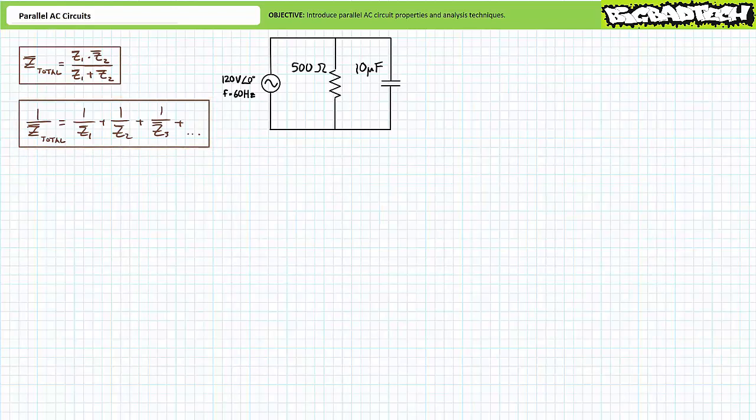Consider a parallel combination of two elements. The first element is a 500 ohm resistor and the second element is a 10 microfarad capacitor. The sinusoidal AC voltage source has an effective value of 120 volts and an excitation frequency of 60 hertz. The complex impedance of the 500 ohm resistor is 500 ohms at an angle of zero degrees. Let's call this impedance Z1.